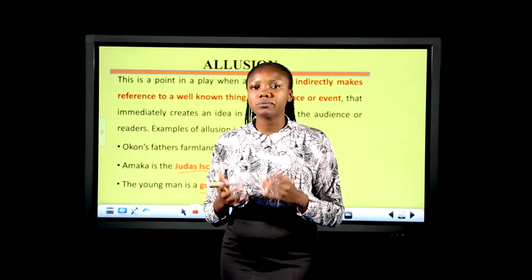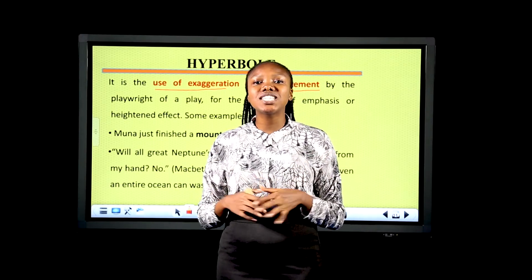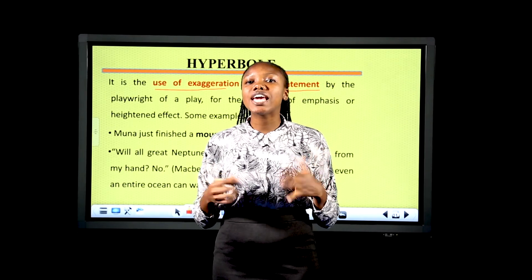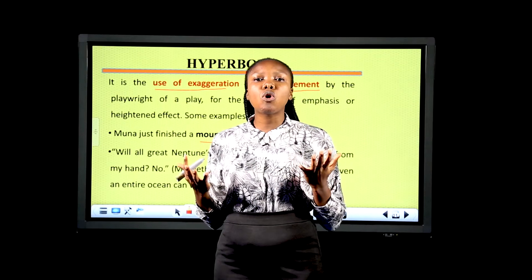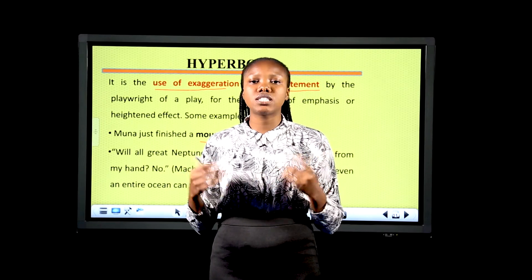Hyperbole is the use of exaggeration or overstatement — doing or saying something in an excessive manner. For example: 'Muna just finished a mountain of Eba' — it's not possible for someone to eat a mountain of Eba. Another example from Macbeth: 'Will all great Neptune's ocean wash this blood clean from my hand?' — Macbeth uses hyperbole to say not even the entire ocean can wash his hands clean. Hyperbole is used by playwrights to heighten effects or make emphasis.